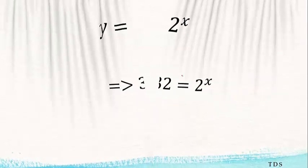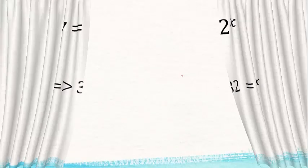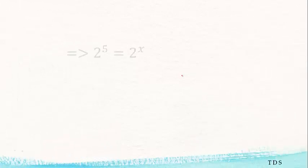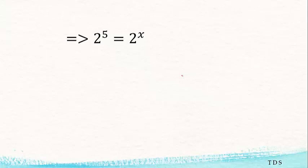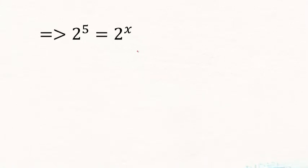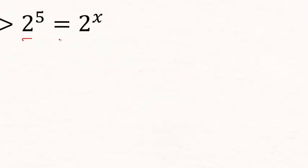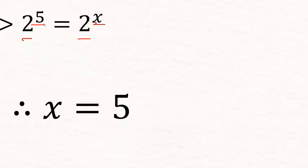We're going to replace 32 with 2 to the power 5. So we have 2 to the power x equals 2 to the power 5. Since we have equal bases, we can equate the exponents: x equals 5. So therefore x equals 5. Thanks for watching and don't forget to subscribe.